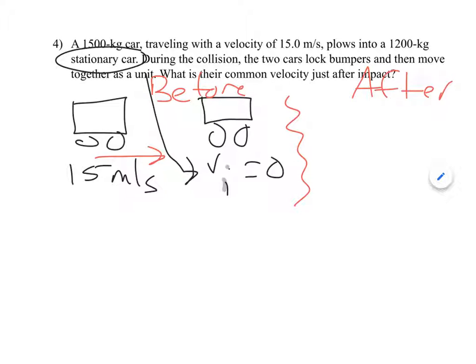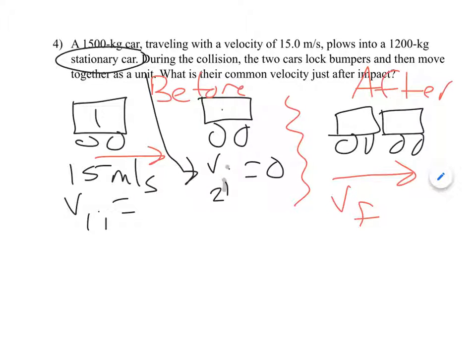Afterwards, the two cars are going to stick together as one thing and they're going to move off together at one speed, we're going to call VF, right? Because it's not really a one or a two. We could call this one V1I and this one V2I because it's two objects. This is object one and this is object two.